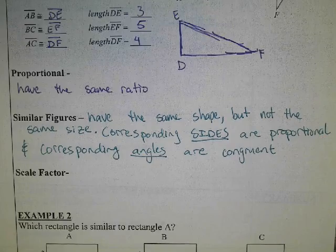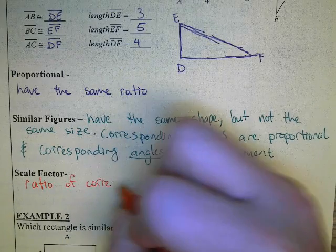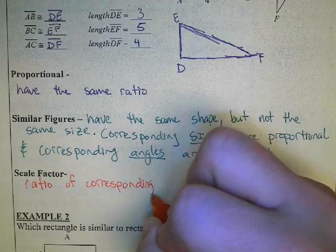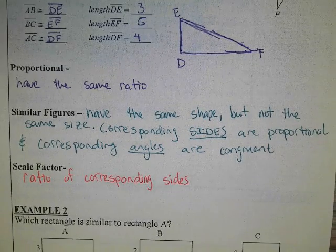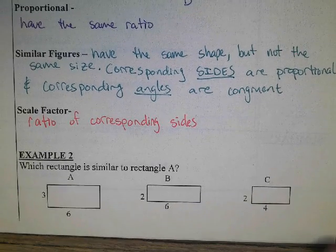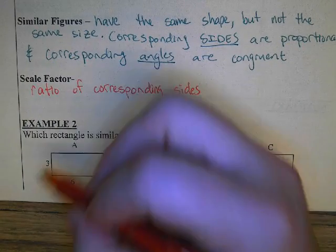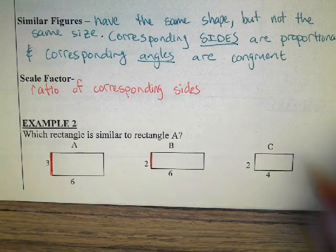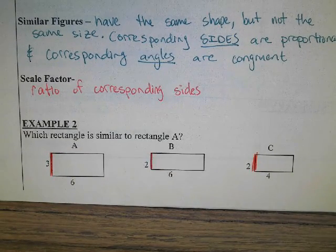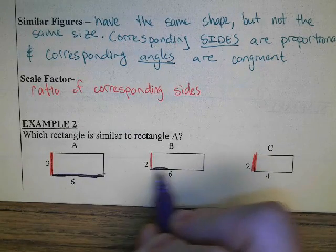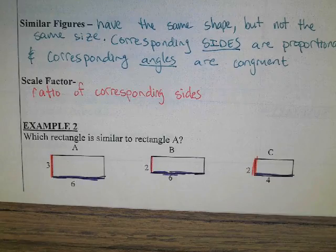The scale factor when dealing with similar figures is the ratio of corresponding sides. How this works is we want to build a proportion using corresponding sides. Then we set up a proportion with ratios of corresponding sides and see if they are equivalent.